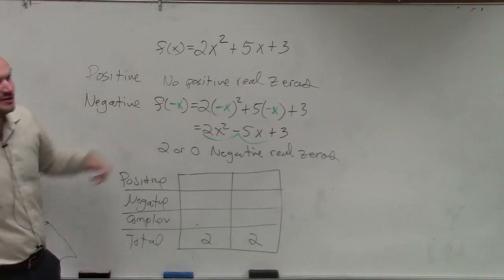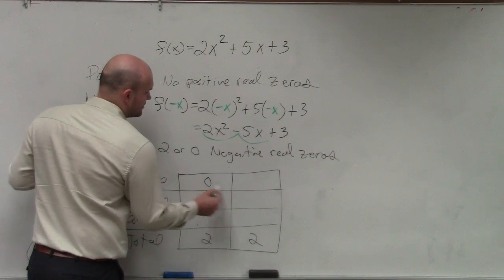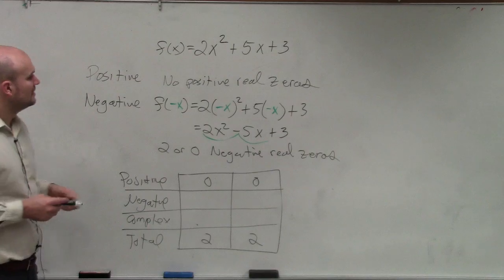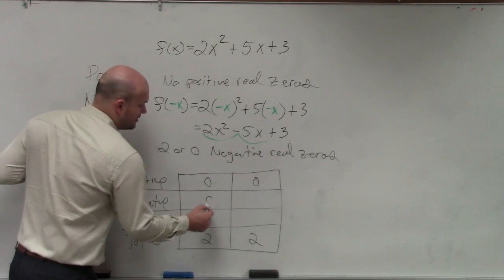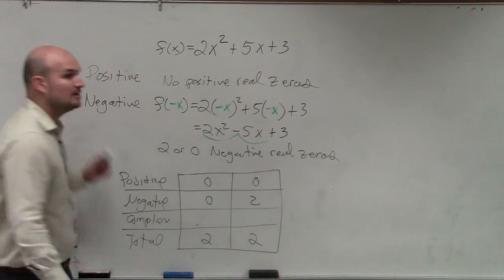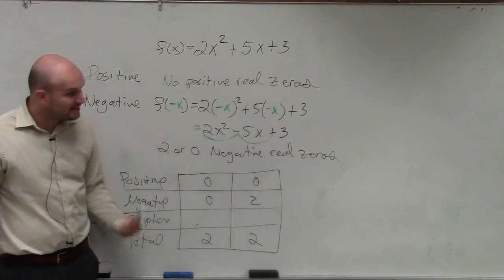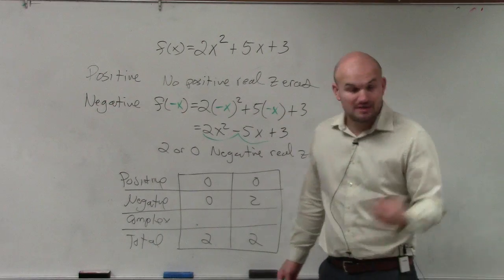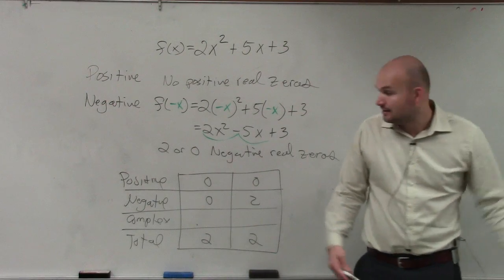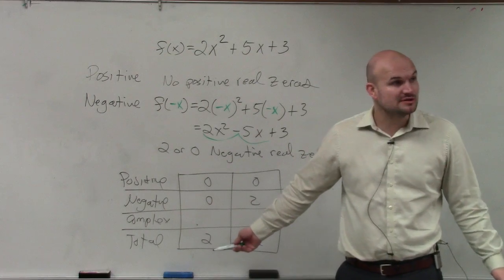All right. So the number of positive. We said there's no positive real zeros. So we'd have 0. For the negative, we said there's 2 or 0. It's one or the other. That's why I have those two columns. So it's 0 or 2. So to find the number of complex. Well, ladies and gentlemen, if I have 0 positive real, 0 positive negative, then how many complex do I have to have to satisfy my two solutions?